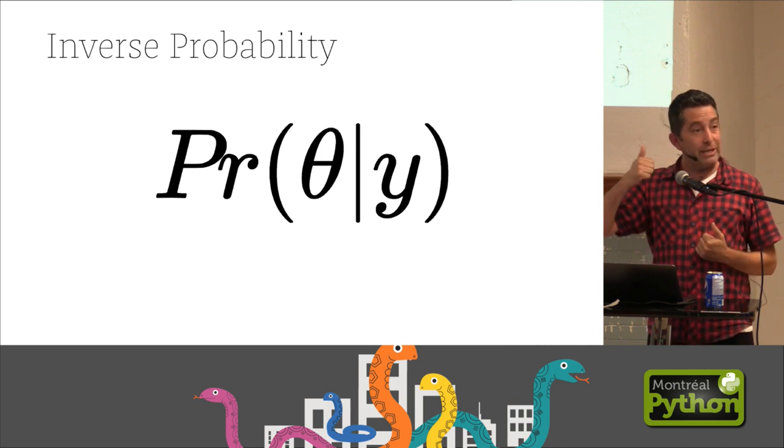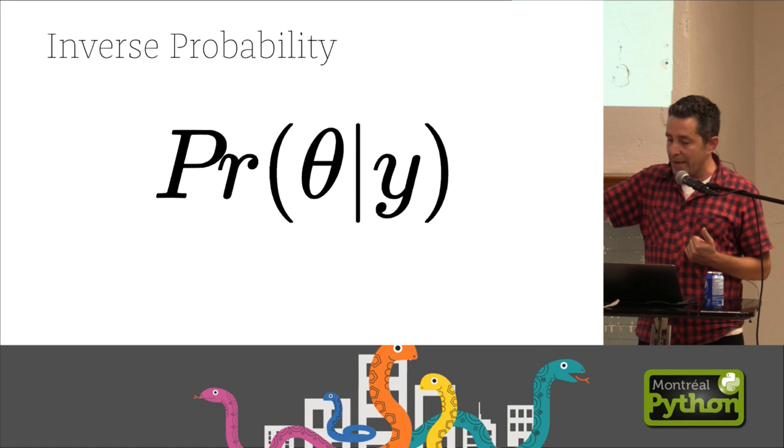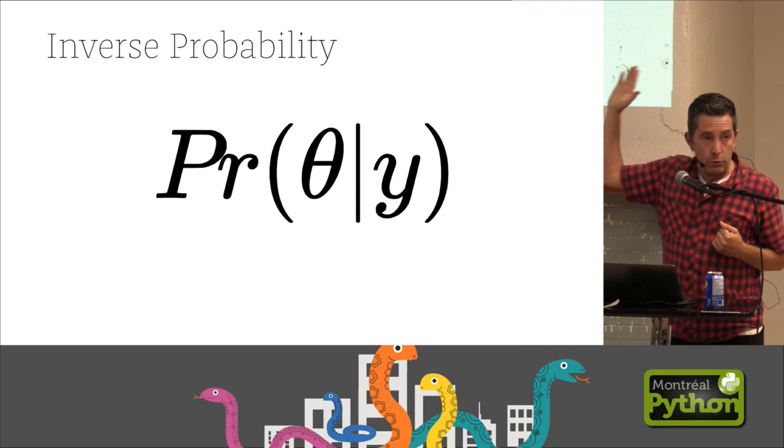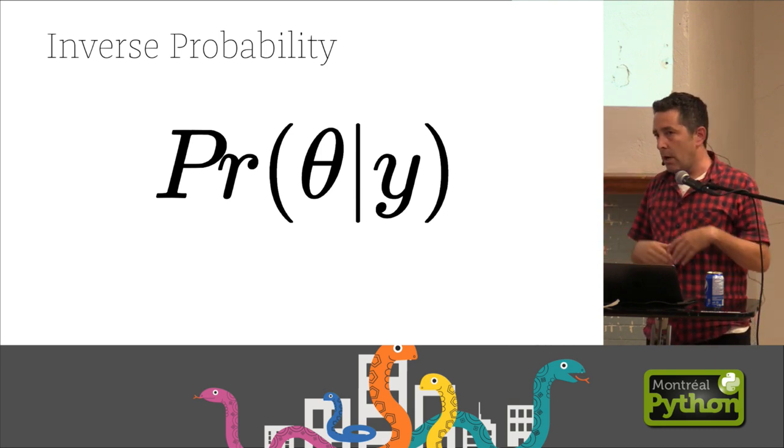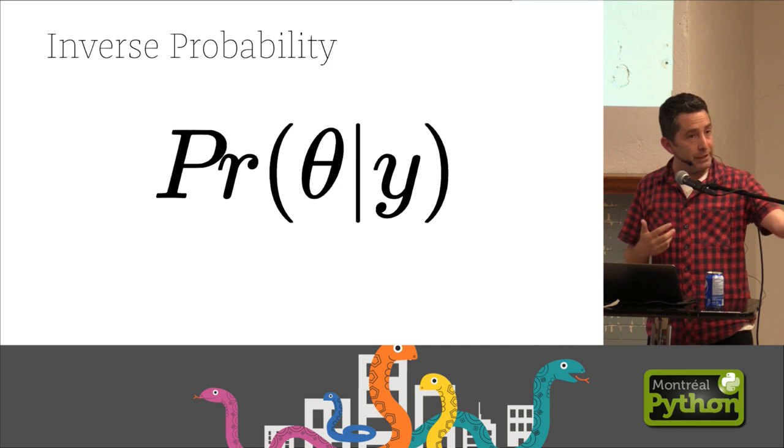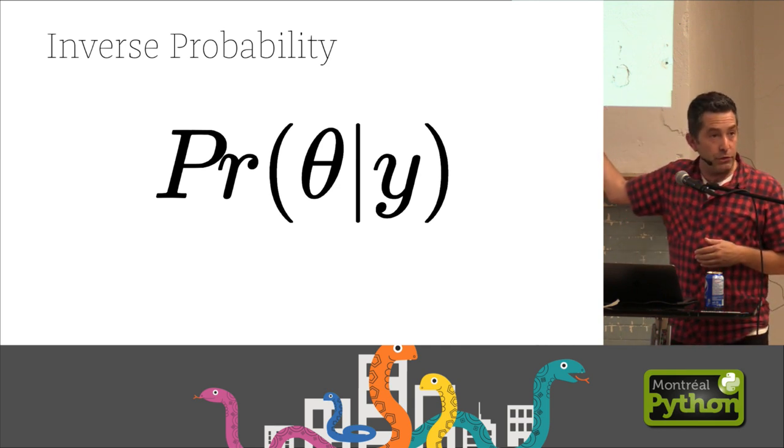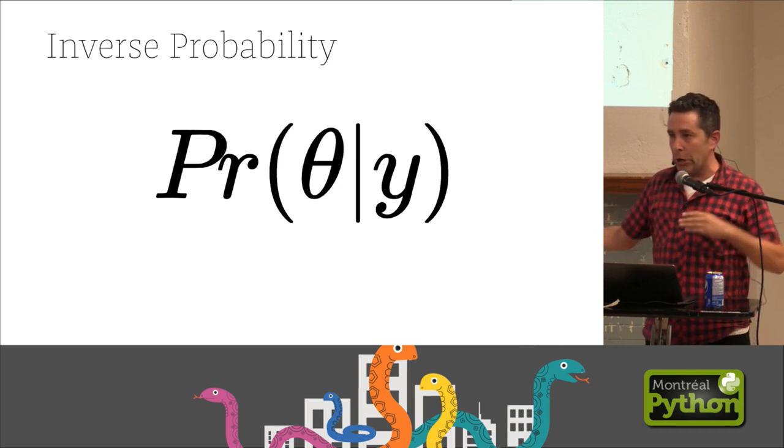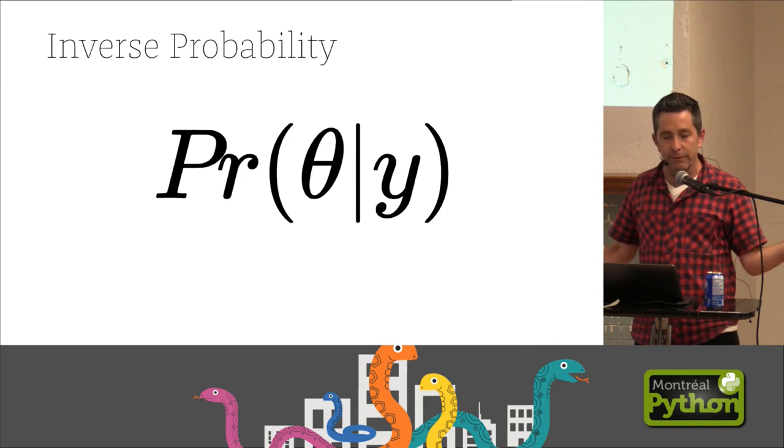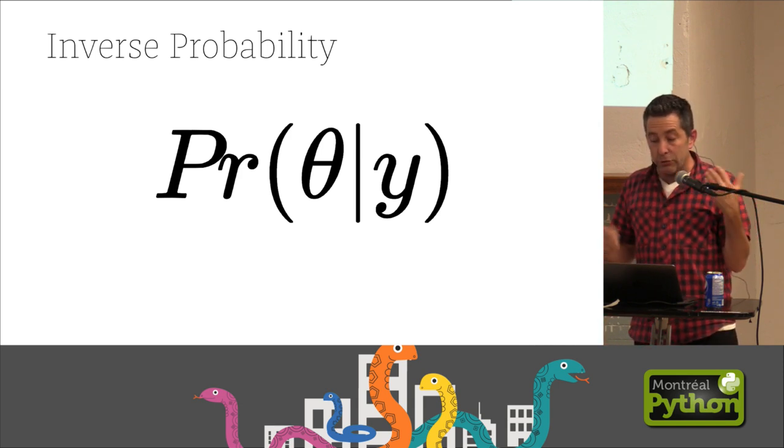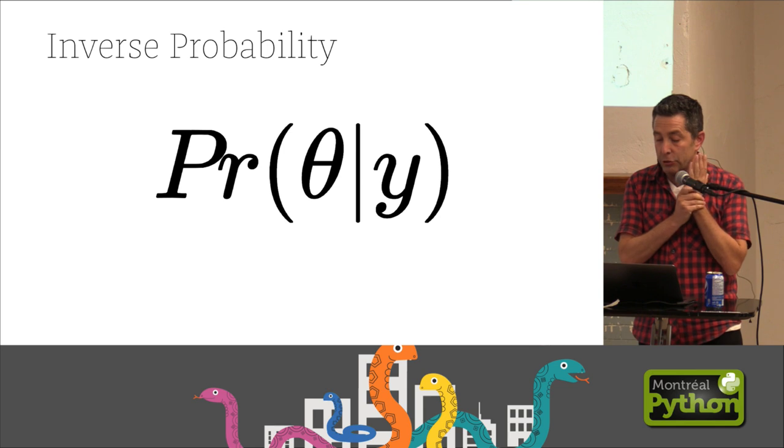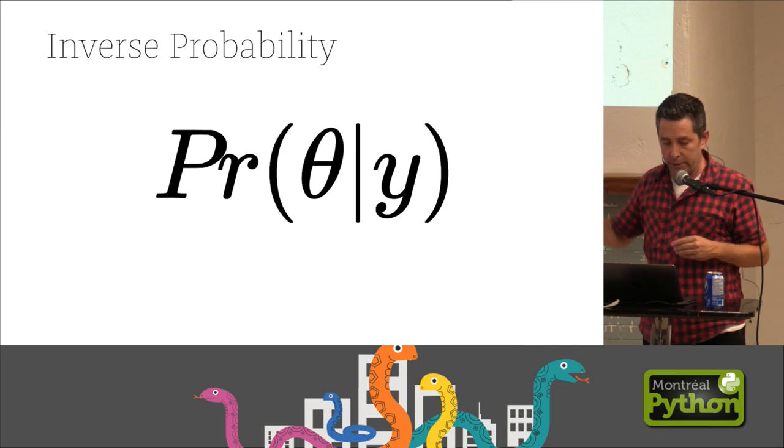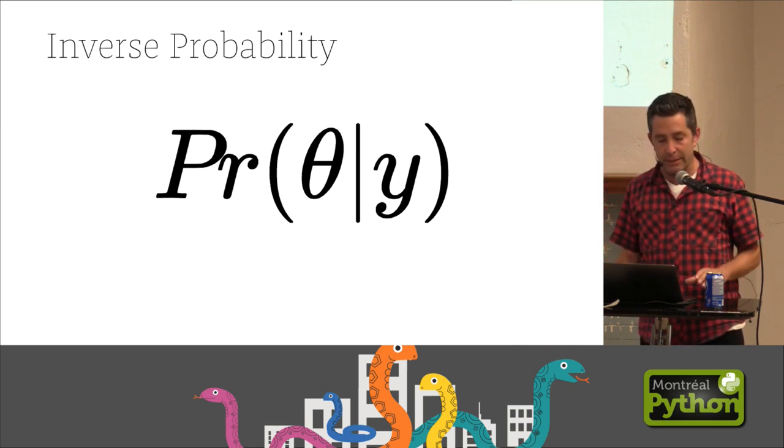Most importantly, it's the fact that we're doing something called inverse probability, where we're modeling effects based on causes. So the only notation I'll show you is that we have things that we don't know, which are theta, parameters, unknown values, future predicted values. And then there are things that we know, things we've observed, which is Y, our data. So everything in Bayes can be classified into things we don't know and things we know.